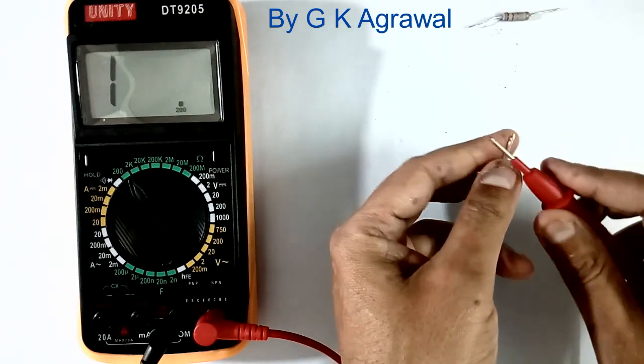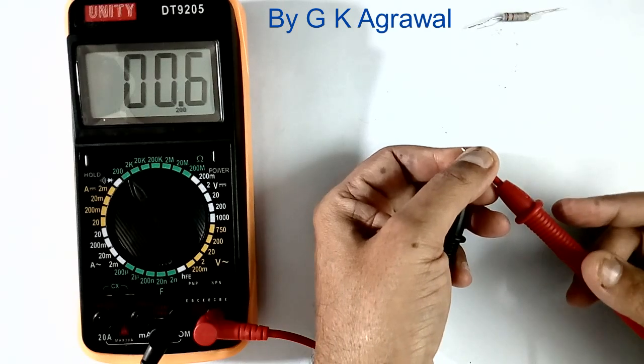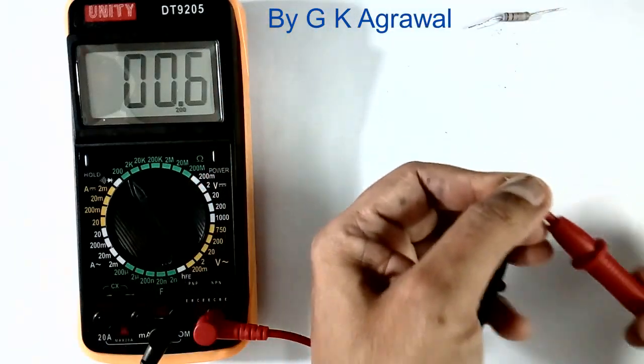Now if I remove the resistor and short this lead, it is showing 0.6 ohms. This 0.6 ohms is the resistance of this lead which is always added to the resistor.